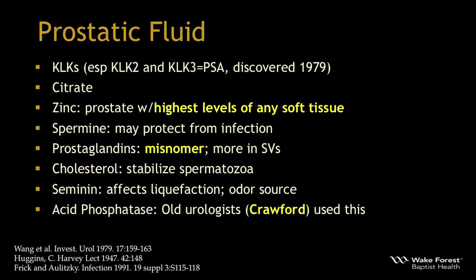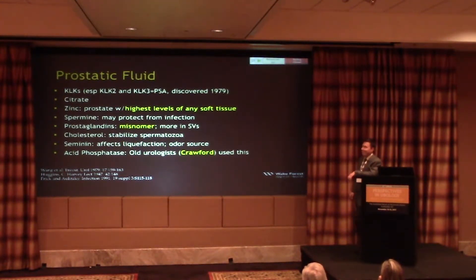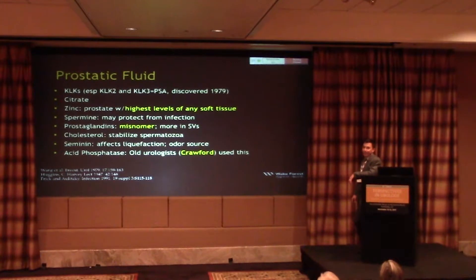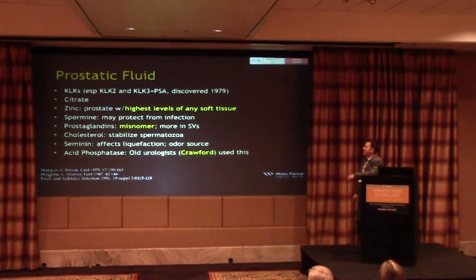Prostatic fluid is not a simple fluid. Its components include kallikreins — of which PSA is one, discovered in 1979 — citrate, zinc (the prostate has the highest level of zinc of any soft tissue), and spermine, which may protect from infection. Prostaglandins were actually named for the prostate, though this is a misnomer since they're more heavily concentrated in the seminal vesicles. Cholesterol stabilizes sperm, there are components related to semen odor, and acid phosphatase was once used to screen men for prostate cancer.